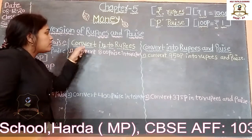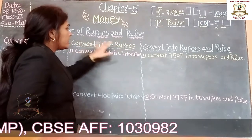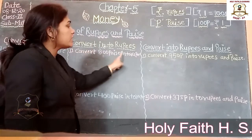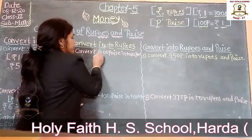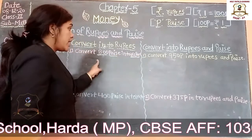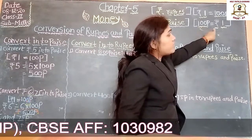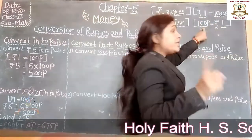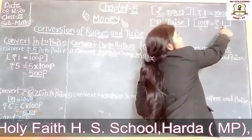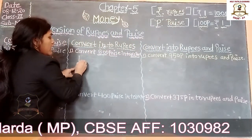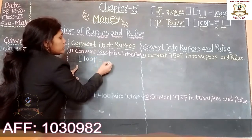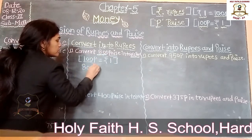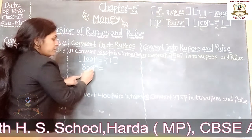Next, convert into rupees. Now we are converting paise into rupees. Take an example: convert 800 paise into rupees. We know that 100 paise is equal to rupees 1.